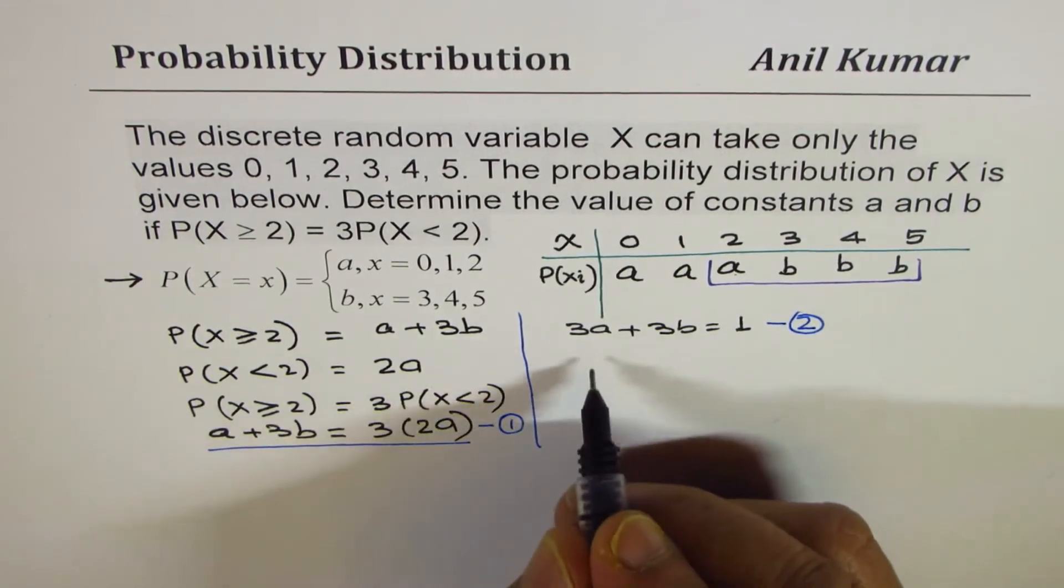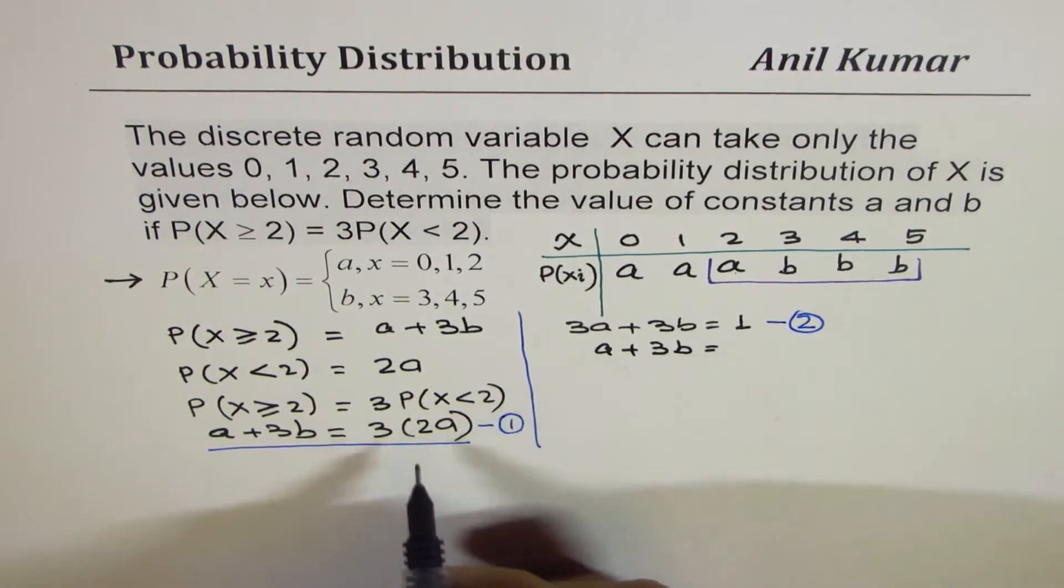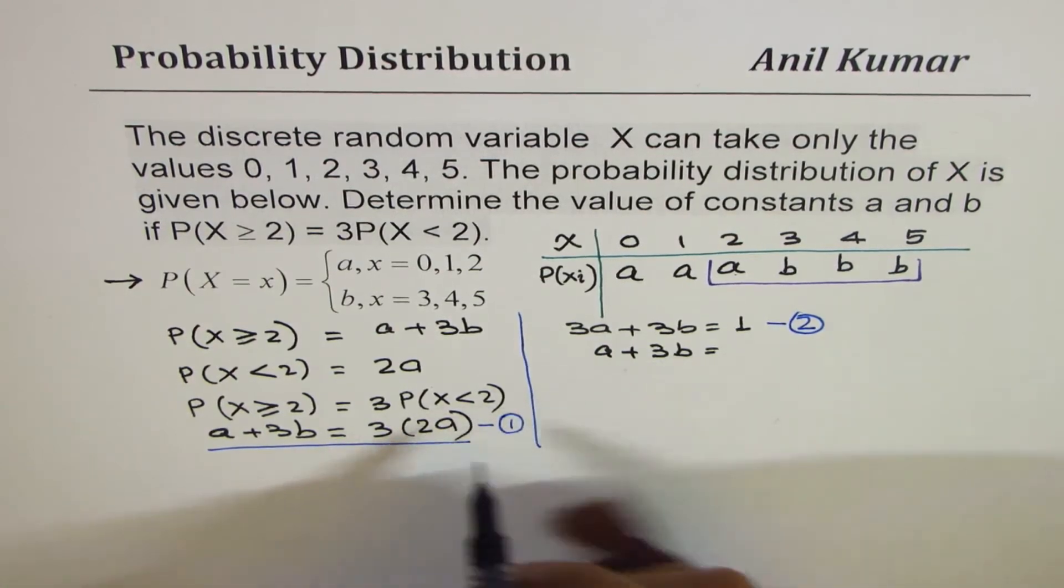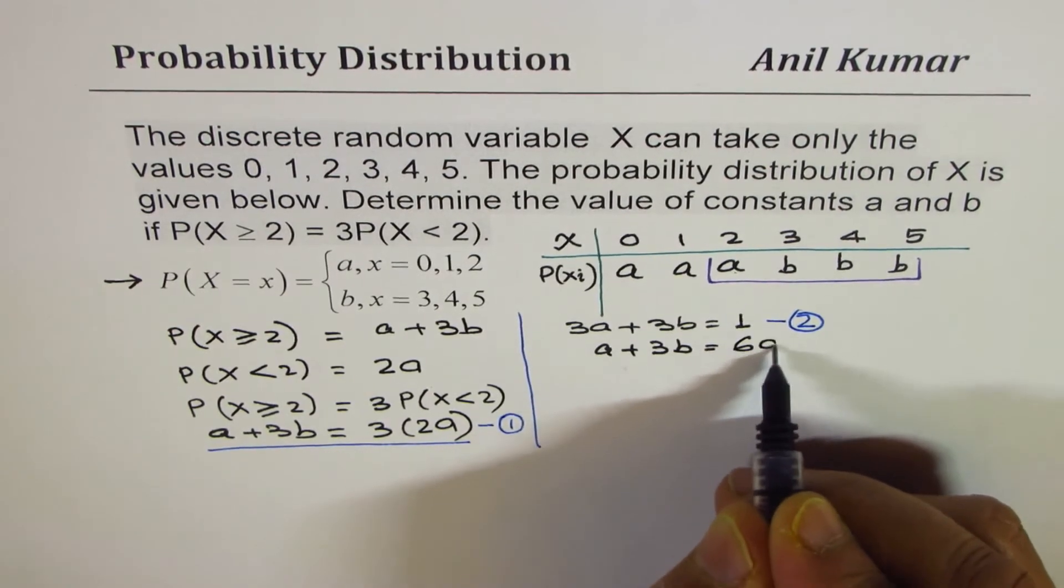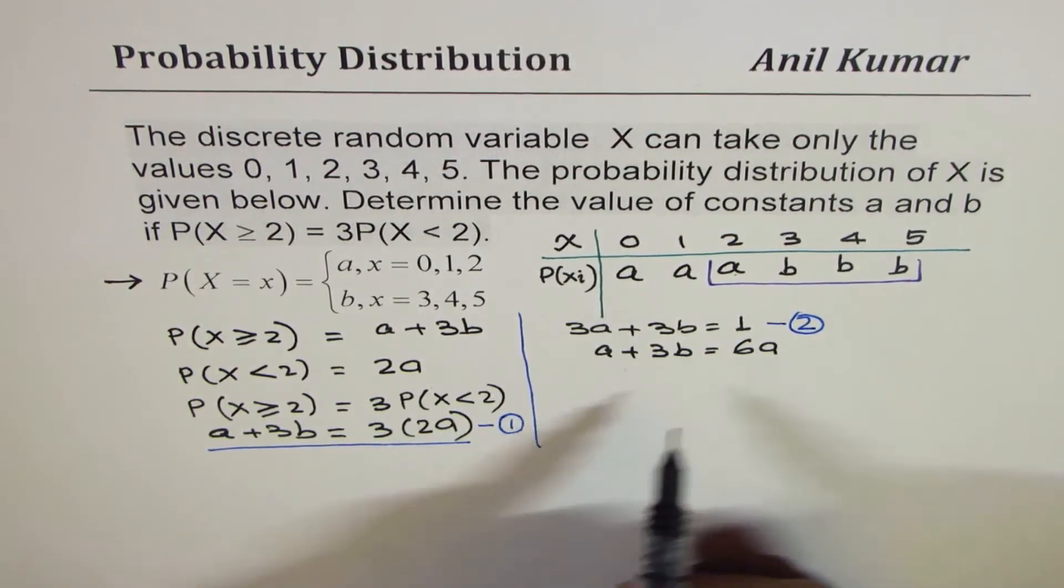So we have two equations to work with. One is a + 3b equals to 3 times 2, which is 6a. We could actually bring it to this side and write. Anyway, let me write 6a. I should have brought it to this side.